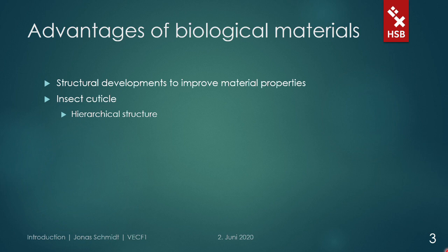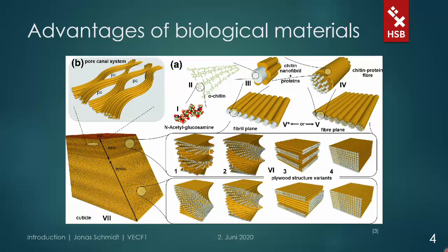Insect cuticle is here no exception. It has a hierarchy as well, as it is built up out of single chitin chains that form fibers embedded in a protein matrix. Depending on the body part and the species, the fibers are oriented differently, so that you can basically say cuticle is a natural fiber-reinforced composite.